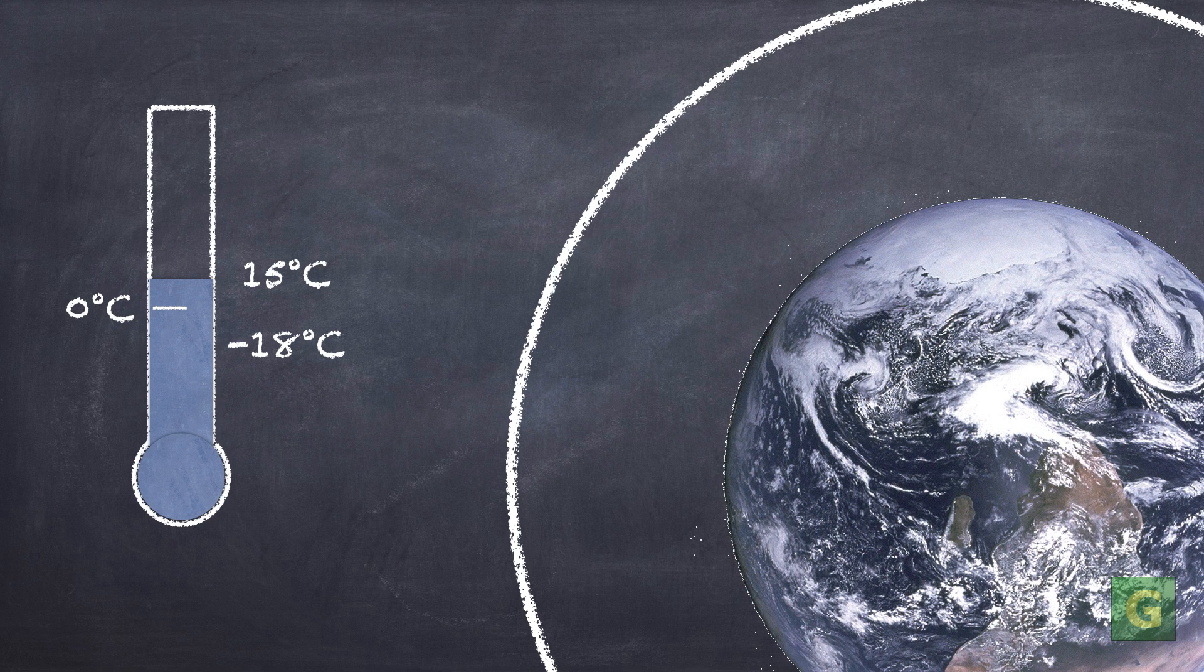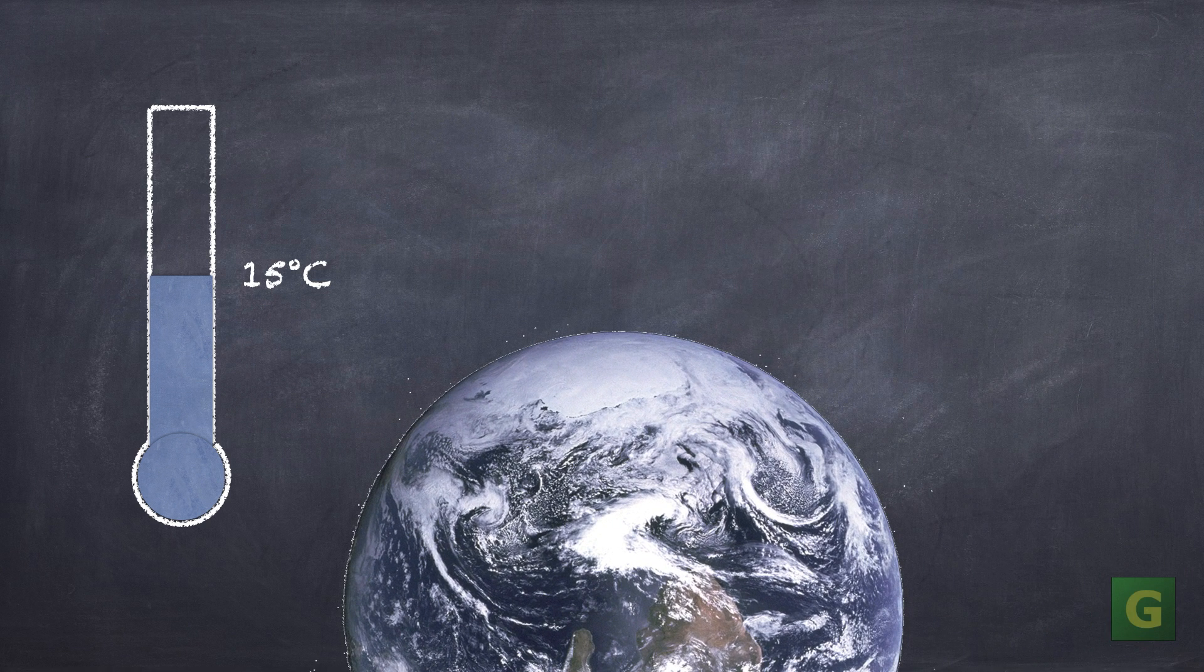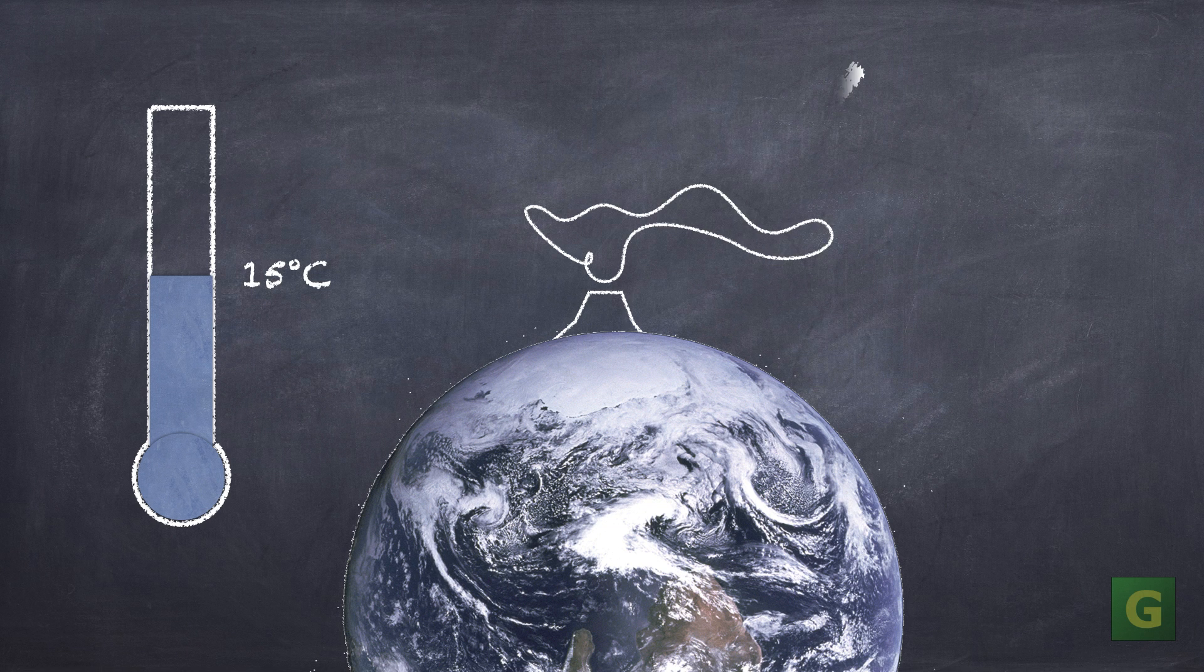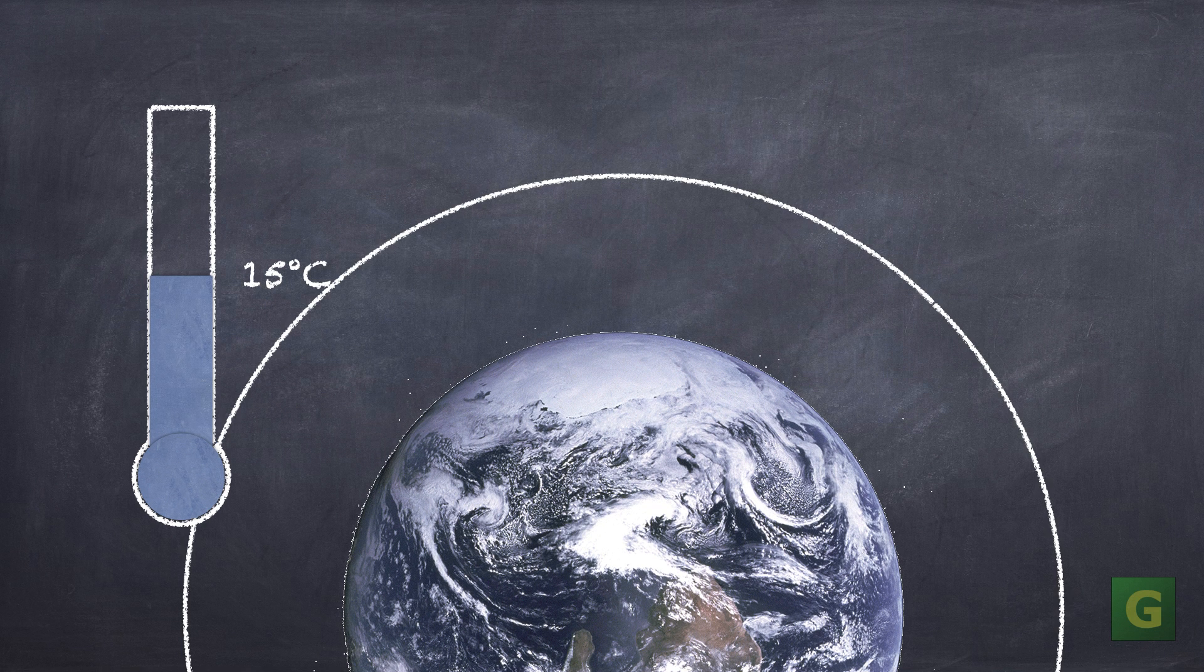The energy balance can be influenced by a number of factors. If a factor lowers the amount of energy that comes in, like dust clouds from a volcanic eruption blocking solar radiation, then the planet gets cooler. If a factor lowers the amount of energy that goes back into space, then the planet gets warmer.